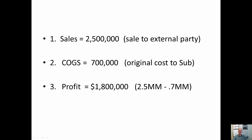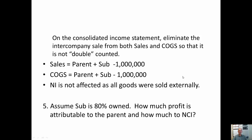The cost of goods sold is the original cost to the subsidiary of $700,000. Therefore, the consolidated profit is $1.8 million. The elimination for this is fairly simple, and the main thing is that you have to remember to do this all the time. When you go to do your consolidated income statement, you're not going to see this on the income statement of the sub or the parent, so you just need to remember to do it.